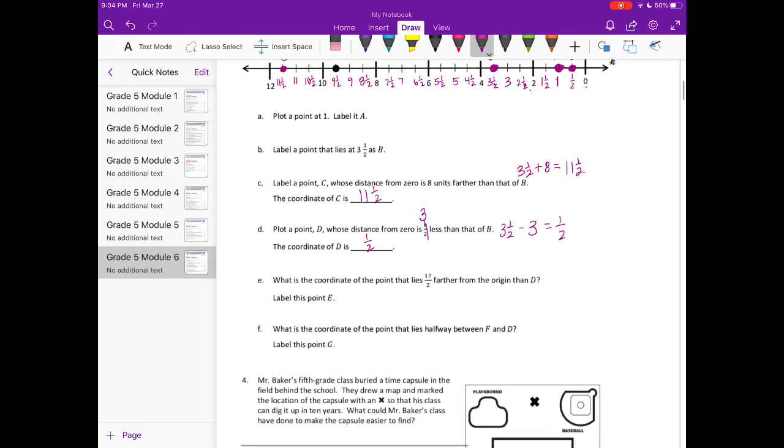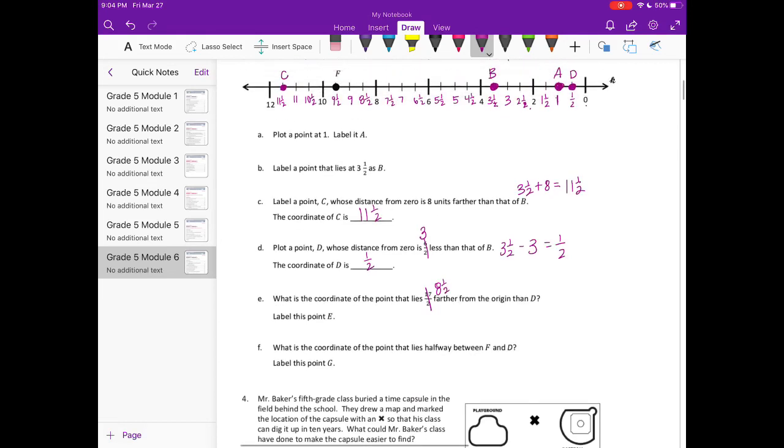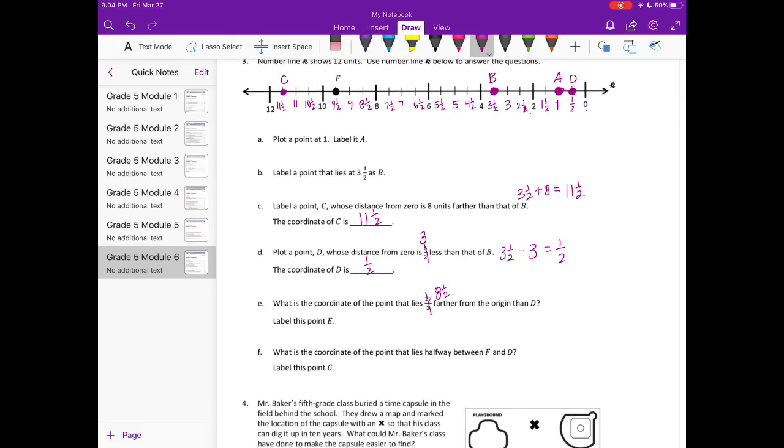What is the coordinate of the point that lies 17 halves further from the origin than D? So 17 halves, that is 8 and 1 half. So we're looking for something that's 8 and 1 half further from 0, the origin means 0, than D, which is 1 half. So 8 and 1 half further, so let's add 8 and 1 half. That would be 9. So E is going to be at 9.